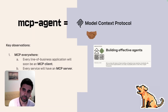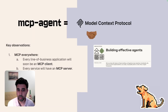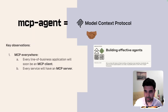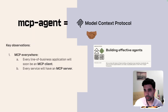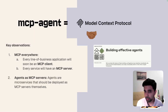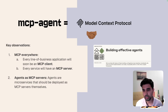Every line-of-business application — think Notion, Google Docs, Cursor, or Claude — is soon going to be an MCP-compatible client that can connect to MCP servers. And on the flip side, every service is going to have an MCP server equivalent — a Linear MCP server, a GitHub MCP server. Any SaaS product that needs to expose itself to LLMs will have an MCP server. The second key choice is that agents should be thought of as microservices and can be deployed as MCP servers themselves.